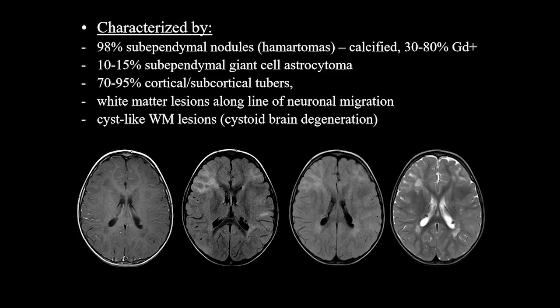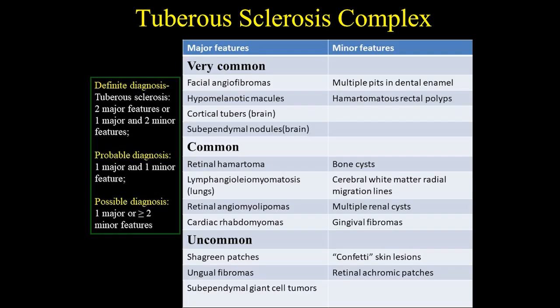10% to 15% of patients can have subependymal giant cell astrocytoma, and from 70% to 95% of patients can have cortical and subcortical tubers. White matter lesions along the line of neuron migration can also be seen, as well as cyst-like white matter lesions. The diagnostic criteria can define probable and possible diagnoses. They have major and minor features, and the very common major features to point out are facial angiofibroma, hypomelanotic macules, cortical tubers, and subependymal nodules. Other findings involving other organs like lungs, kidney, and heart should be assessed to fulfill the criteria to make the correct diagnosis.